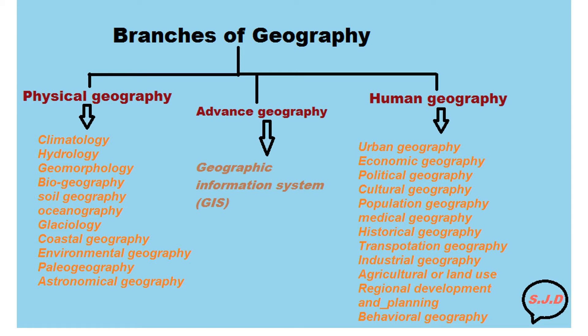These are the different branches of geography. Physical geography includes climatology, hydrology, geomorphology, biogeography, soil geography, oceanography, glaciology, coastal geography, environmental geography, paleogeography, and astronomical geography.